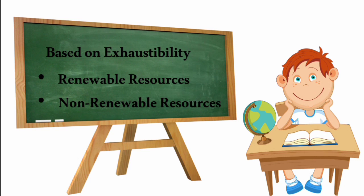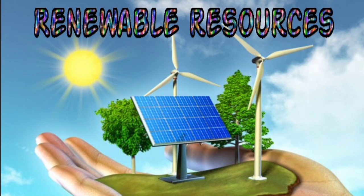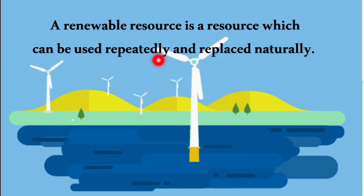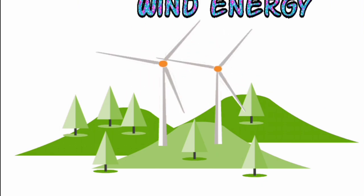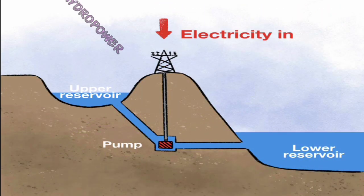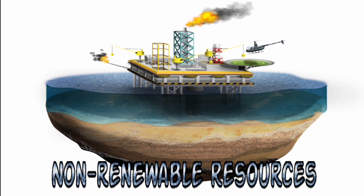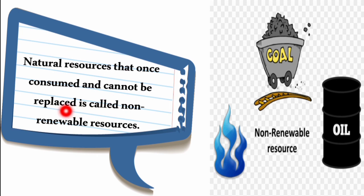Based on exhaustibility, resources are classified into renewable and non-renewable. A renewable resource can be used repeatedly and replaced naturally — for example, solar energy, wind energy and hydroelectric power. Non-renewable resources, once consumed, cannot be replaced.